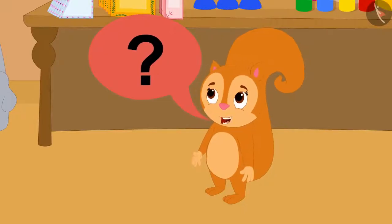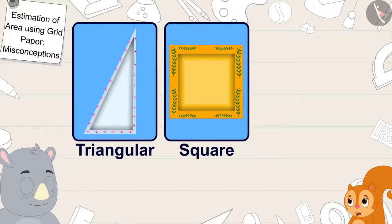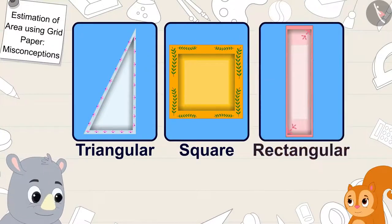But how is that possible, Gaggoo? This plate is triangular. This one is square shaped. And this plate is rectangular.